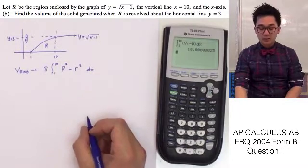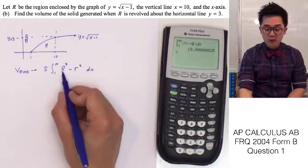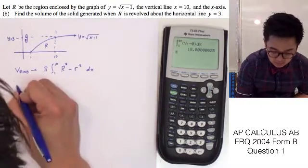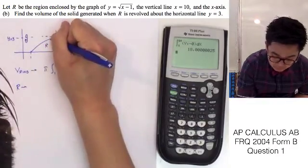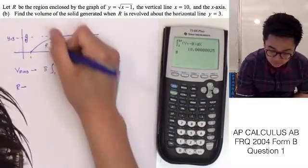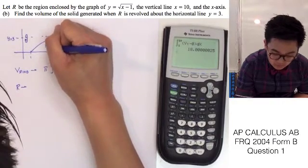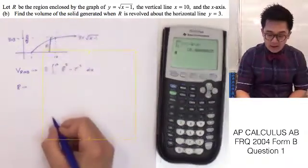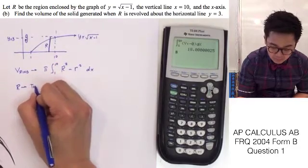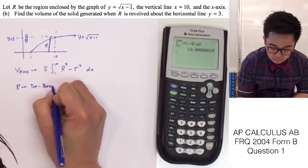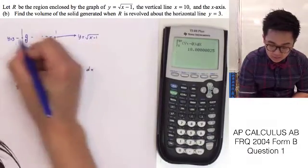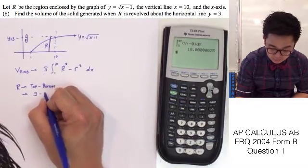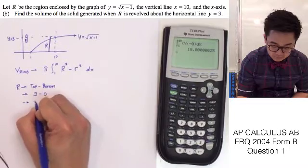All we need to do is figure out what big R and small r are. Since the x-axis is included in the bounded region, big R is the top minus bottom from the axis of revolution. The top function is y equal to 3 and the bottom function is y equals 0, so big R is just 3.